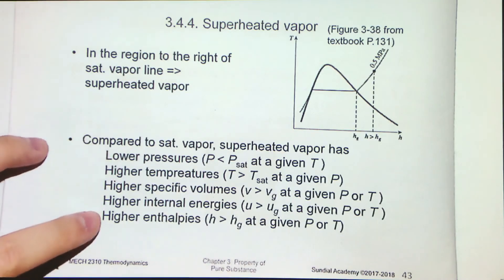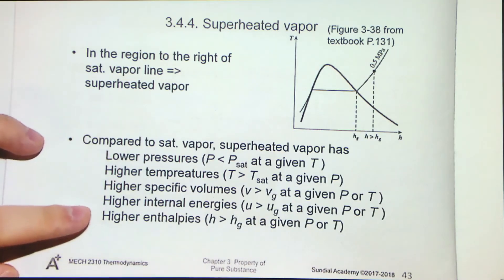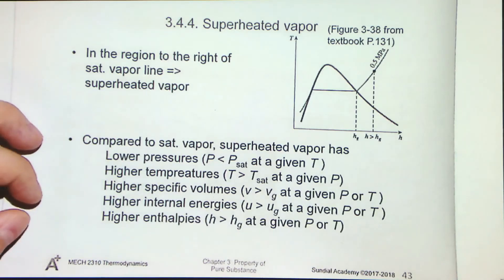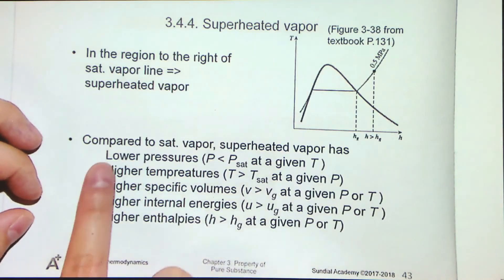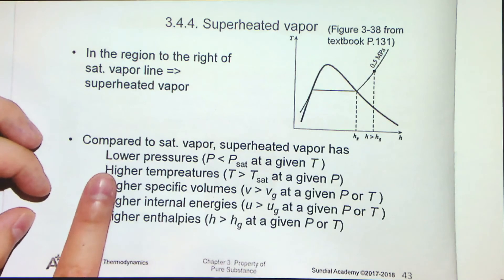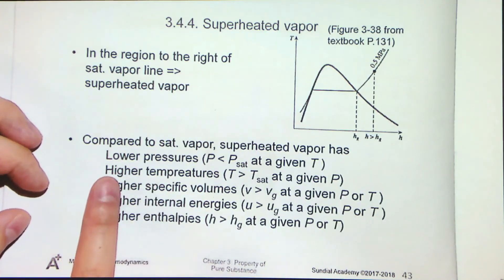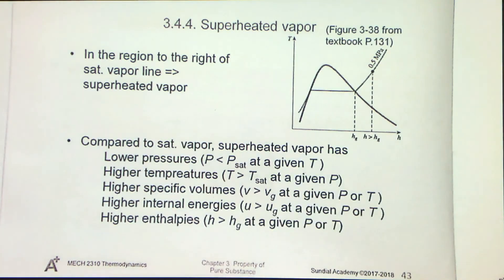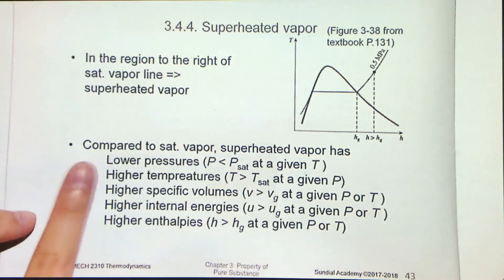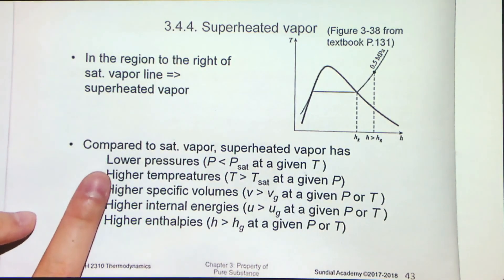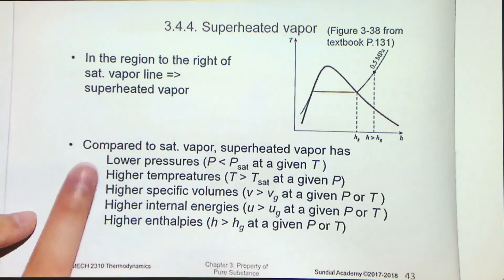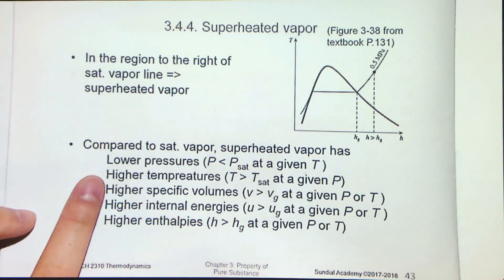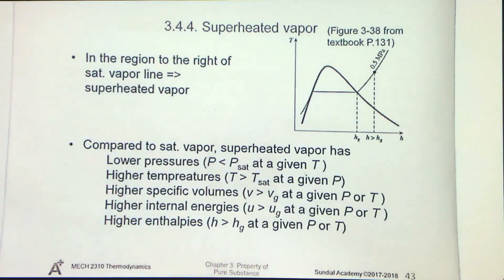These five features are useful, but the most useful ones for our computation purpose will be the first two: lower pressure and higher temperature. In example 12, in the next few sections, I will have an example to summarize all of the things we have discussed. You will see how these two features play a role in helping us determine which table we should use. Let's see some examples to get a clear idea.